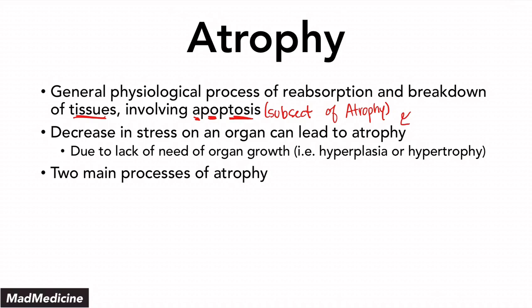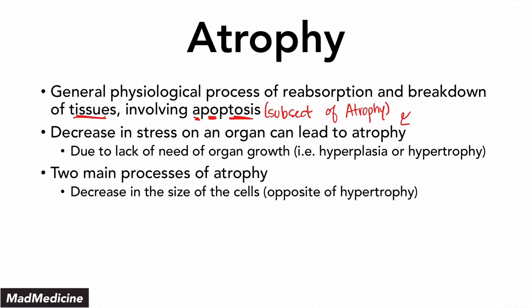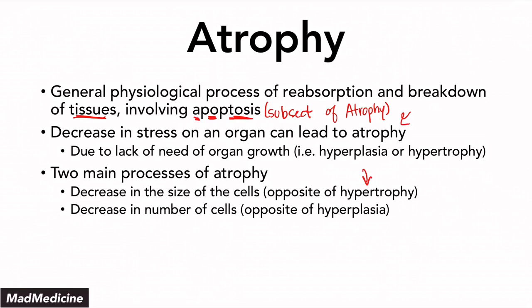There are two main processes that occur when an organ is going through atrophy. First, the organ ends up decreasing the size of its cells, which is essentially the opposite of hypertrophy. Or it undergoes a decrease in the number of cells, which is the opposite of hyperplasia. If it decreases in the size of the cell, it's reversing hypertrophy. If it decreases the number of cells, it's reversing the hyperplasia that has occurred. Knowing just what happens in atrophy is not enough — you need to know the mechanisms, because they are very specific to each: the decrease in size and the decrease in number.